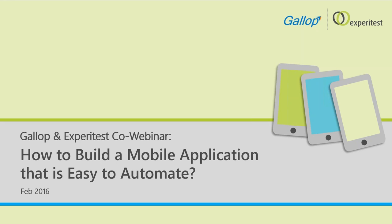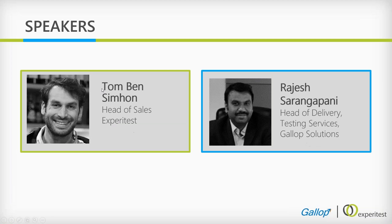In this session we're going to talk about how to build or create a mobile application that is easy to automate, or in more general terms, test. The main item of today's webinar is the creation of a testable application — how can you, with the collaboration of developers, create an application which will be easy to automate and maintain the automation script. The session will be conducted by myself, Tom, who manages Xperitest's sales department, and Rajesh, who is the head of delivering Gallup Solutions.